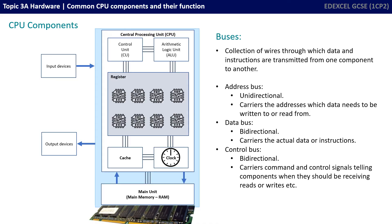And finally we have the control bus, another bidirectional bus. You can think of this as the bus which carries the command and control signals, telling all the various components when they should be receiving read signals or write signals, so it helps to coordinate the CPU.